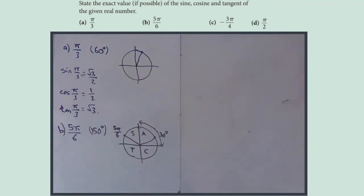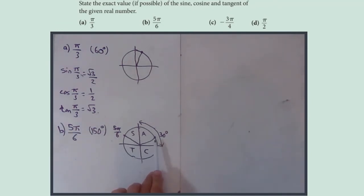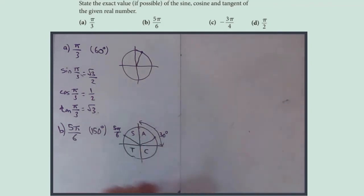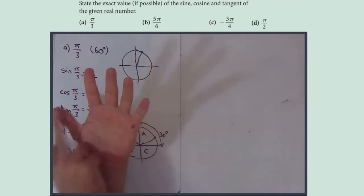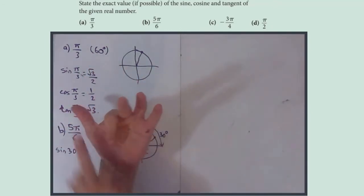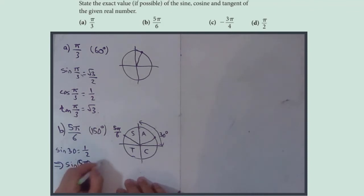Using CAST, we know that in the second quadrant only sine is positive. So the values for sin, cos, and tan of 5π/6 are the same numerically as for π/6, but sine keeps its sign while cos and tan are negative. Sin(30°) from the hand: put 30 down, it's √1/2 = 1/2, so sin(5π/6) = 1/2.